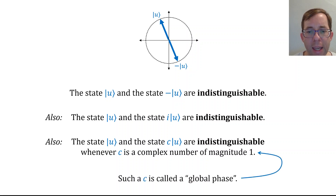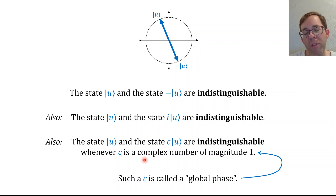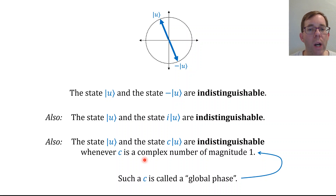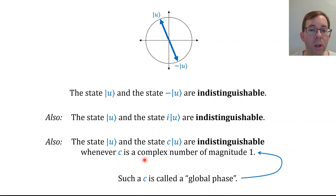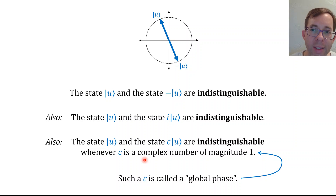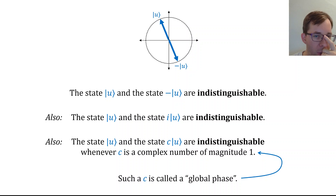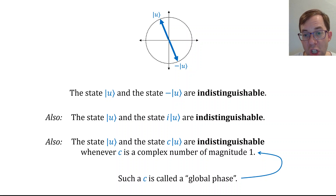This number c—a complex number of magnitude 1 that might be multiplied against your state—is sometimes called a global phase. A phase basically just means a complex number of magnitude 1. You'll see this phrase arise when people say a state u is indistinguishable from the same state multiplied by a global phase, or that multiplying a qubit state by a global phase doesn't matter because it leaves you with a state that's indistinguishable. That's a little fact that's true about quantum states.